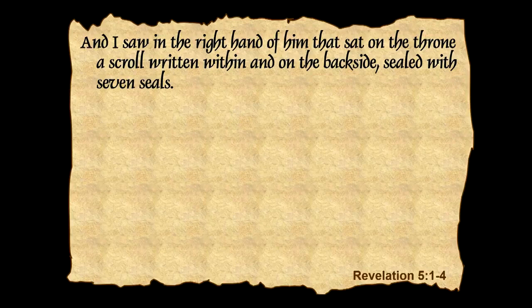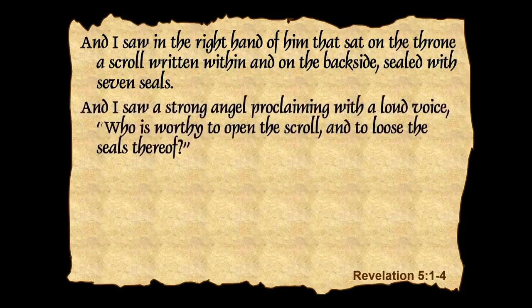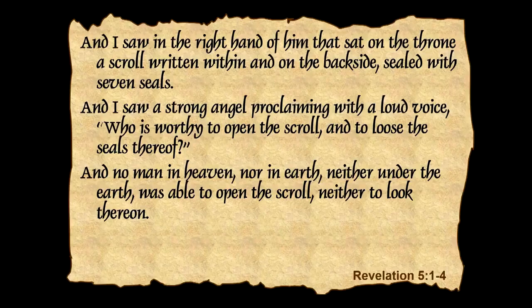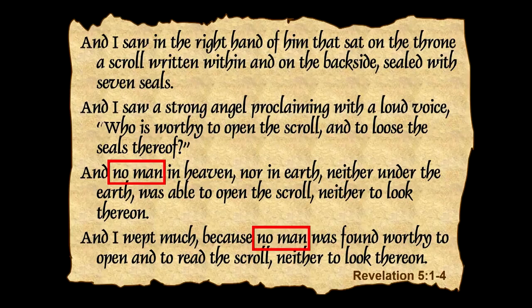John saw in the right hand of him that sat on the throne a scroll written within and on the backside, sealed with seven seals. A strong angel proclaimed, Who is worthy to open the scroll and to loose the seals thereof? No man in heaven, earth, or under the earth was able to open the scroll. John wept much, because no man was found worthy. It had to be a kinsman of Adam to open that scroll — it's a title deed to the earth.